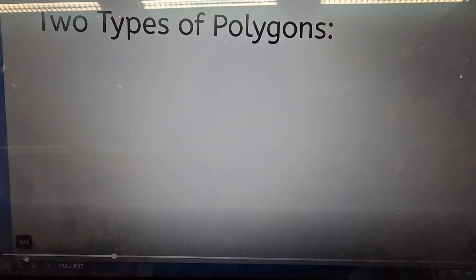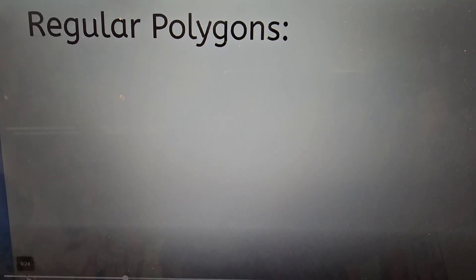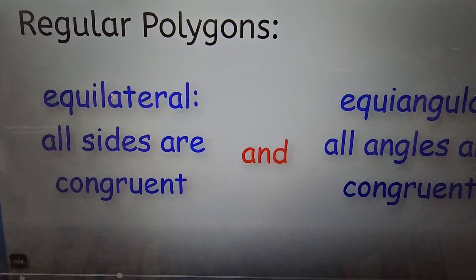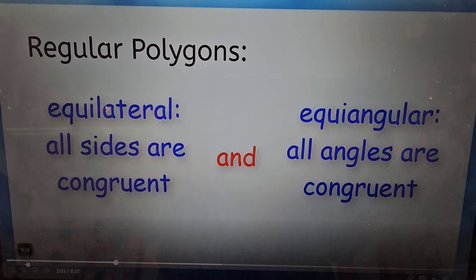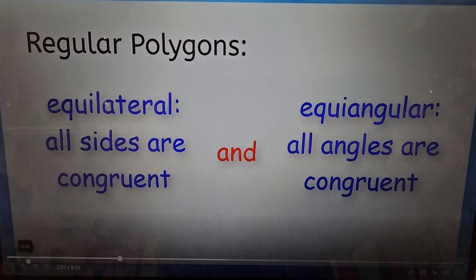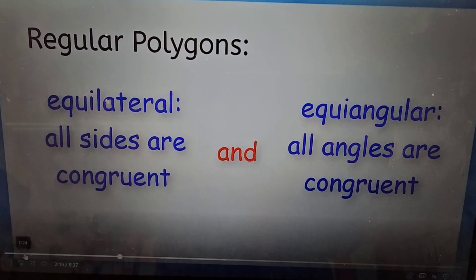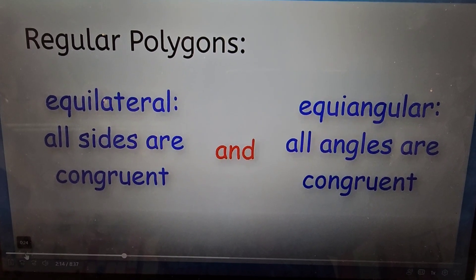There are two types of polygons, regular and irregular. Regular polygons are equilateral and equiangular. Equilateral means that all of the sides are congruent. They are the same shape and size. And equiangular means all the angles are congruent. They are all the same measure of degrees.